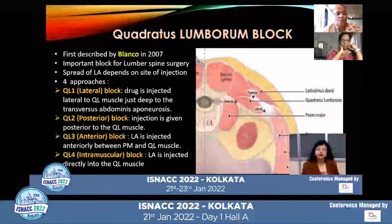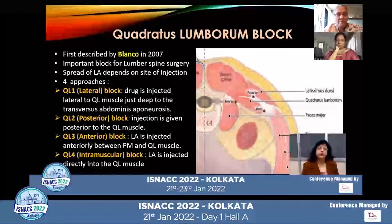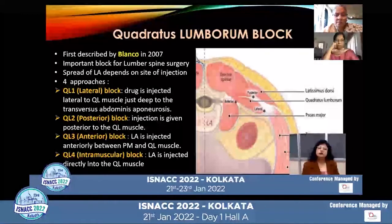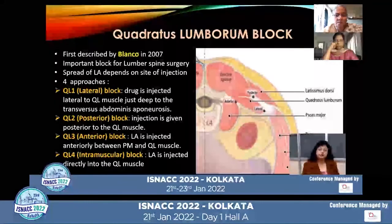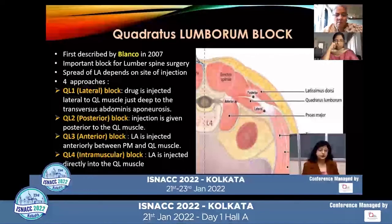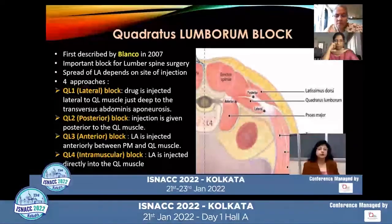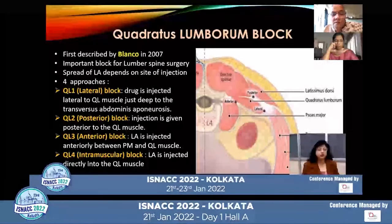The quadratus lumborum block was first described by Blanco in 2007 as an extended approach to the TAP block. It is an important block for lumbar spine surgery; however, it has been widely used for abdominal and hip surgeries. The spread of local anesthetic depends upon the site of injection. Four approaches have been defined by various authors.